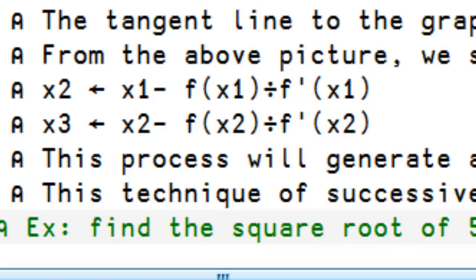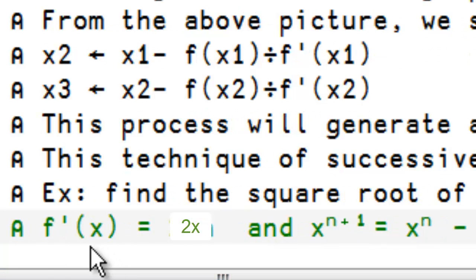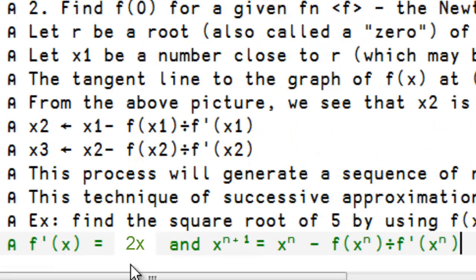For example, let's try to find the square root of 5 by using the formula f of x is x exponent 2 minus 5. So,